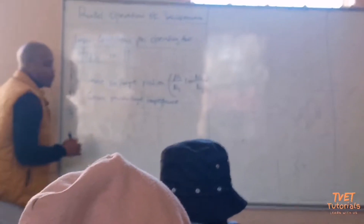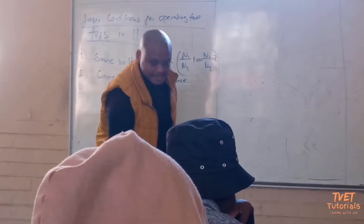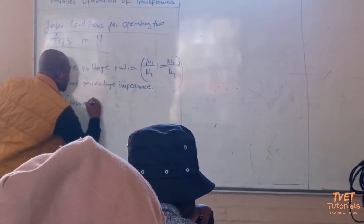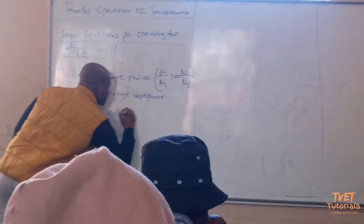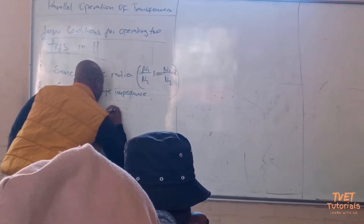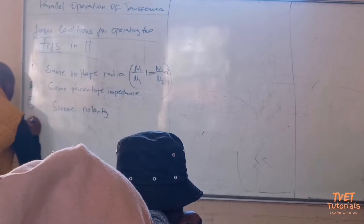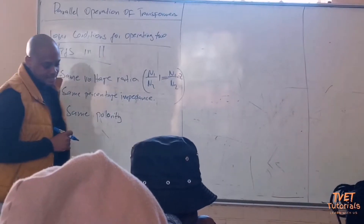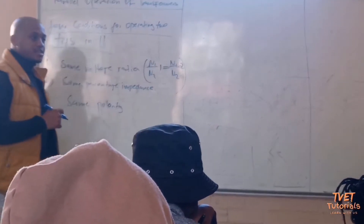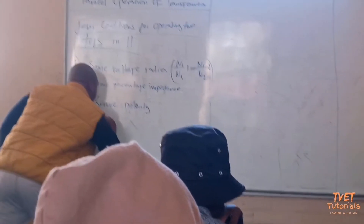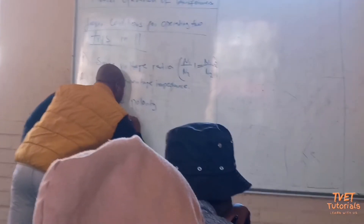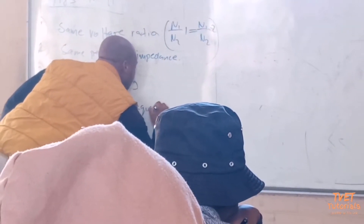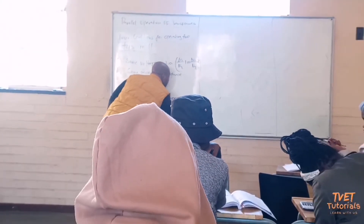The third point says that they must have the same polarity. Both transformers must have the same polarity and phase sequence. And lastly, number four, the fourth point says that they must have the same phase sequence.